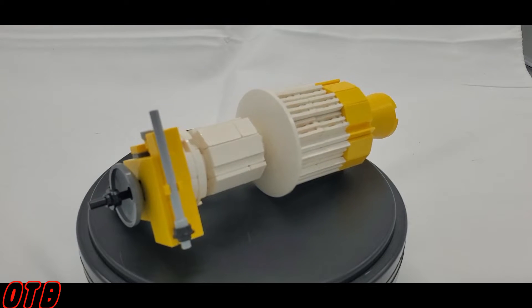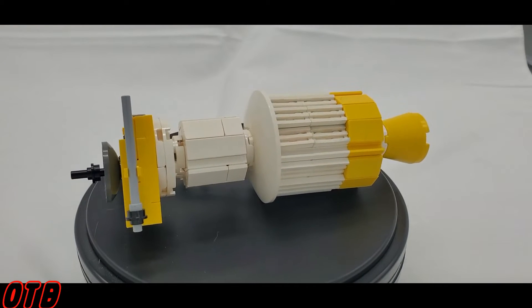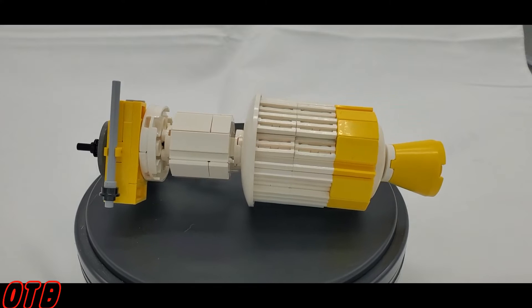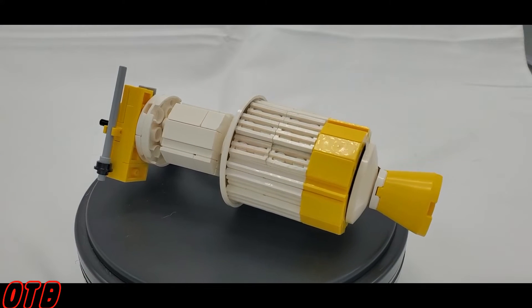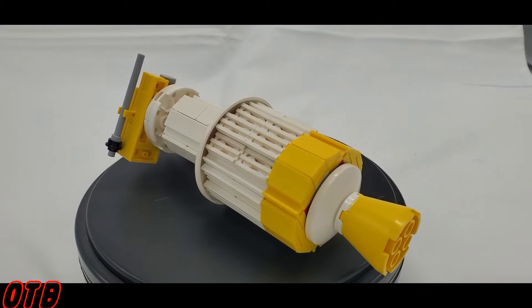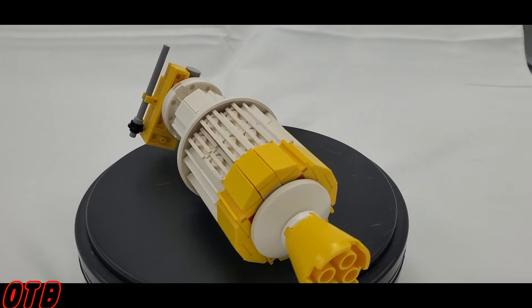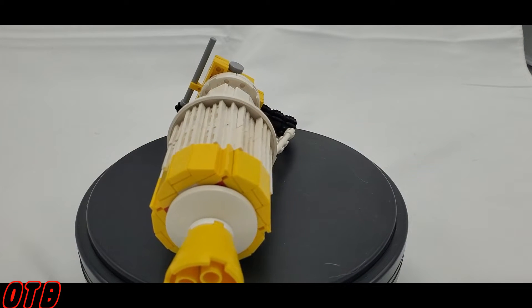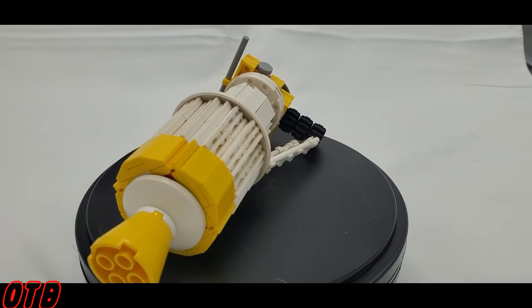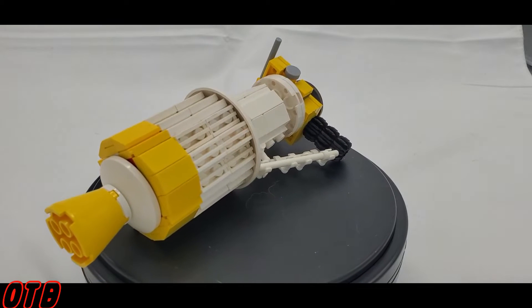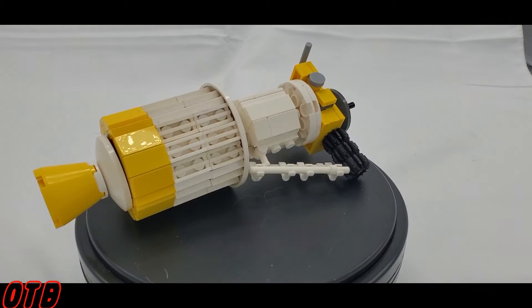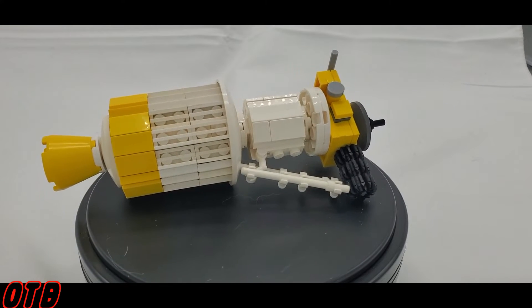This MOC contains only 167 pieces and in my opinion is the most accurate recreation of the Ulysses space probe. So if you are one of the countless people who LEGO disappointed and you were not able to get their version, this is a really nice alternative. And just to be clear, it is 1:70 scale, or the same scale as the Space Shuttle.